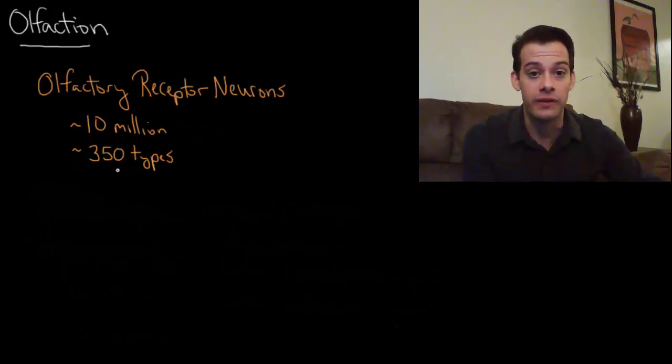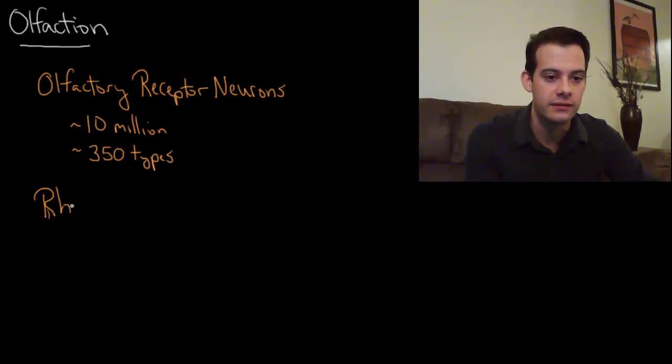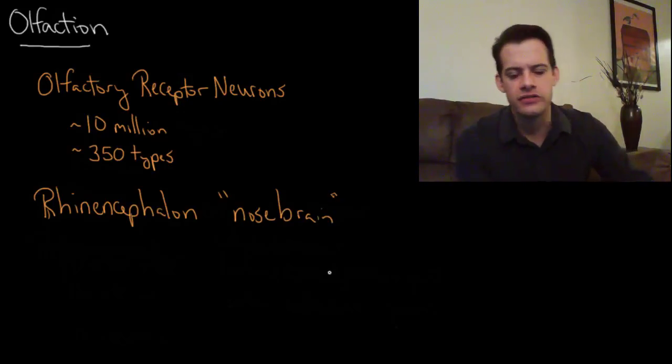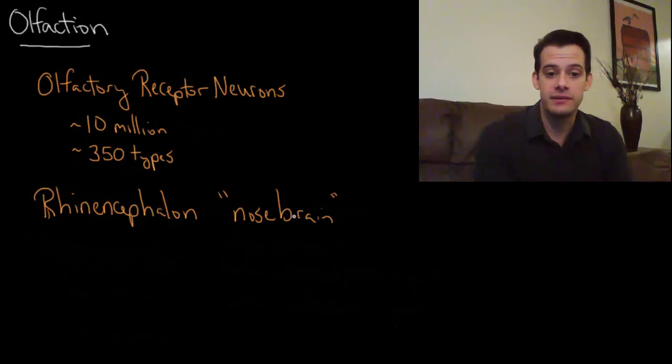Now the area of the brain where this processing occurs is called the rhinencephalon, and this literally means nose brain. So this is the area of the brain that processes this olfactory information. And it's kind of unique in that all of our other senses the information first goes to the thalamus and then gets projected out to the cortex.